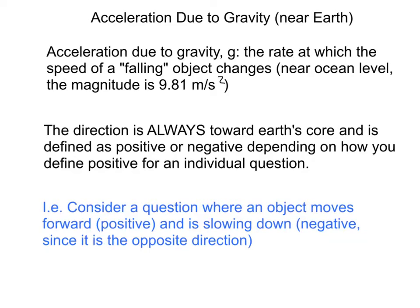And there is a value when you're near Earth's surface or ocean level, so we call that acceleration due to gravity, and you'll often see it represented with the letter g. It represents the rate at which the speed of a falling object changes. And near ocean level, the magnitude of that g is 9.81 meters per second squared.